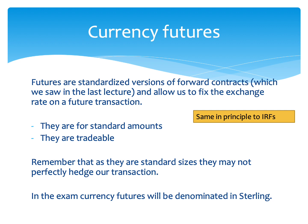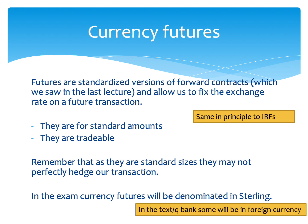It's just worth mentioning that in the exam, currency futures are going to be denominated in sterling. So your futures will cover you, typically, for £50,000 worth of transaction each. In the question bank there may be a few questions where the futures are denominated in the foreign currency — a future may perhaps relate to $50,000 or something like that — but that's not something you'll see in your exam. So if you spot that happening, just move on to a different question.